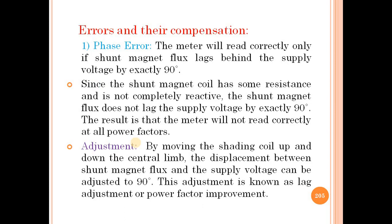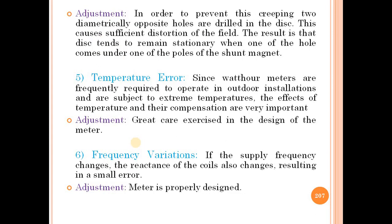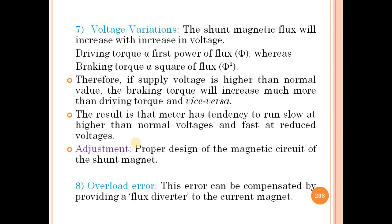There are 8 errors we discussed in the last lecture: the first is the phase error, the second is speed error, the third is frictional error, the fourth is creeping error, the fifth is temperature error, the sixth is frequency variations, the seventh is voltage variations, and the eighth is overload error.